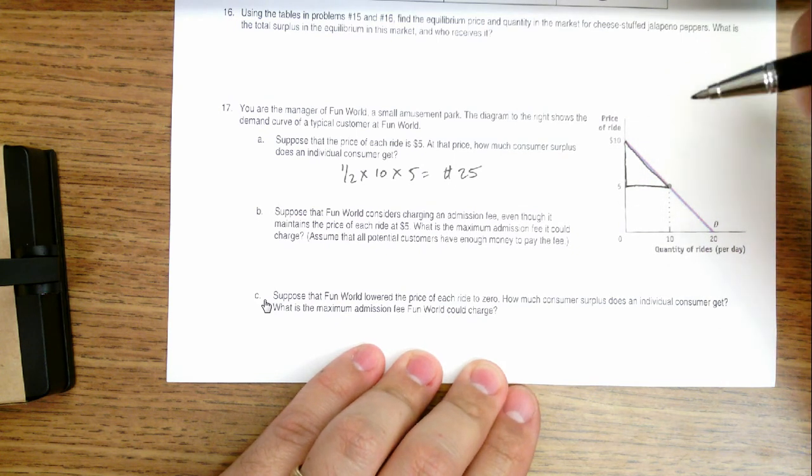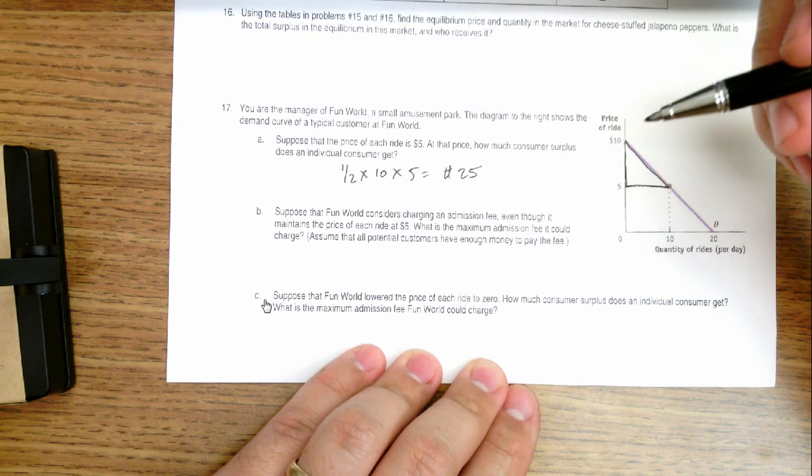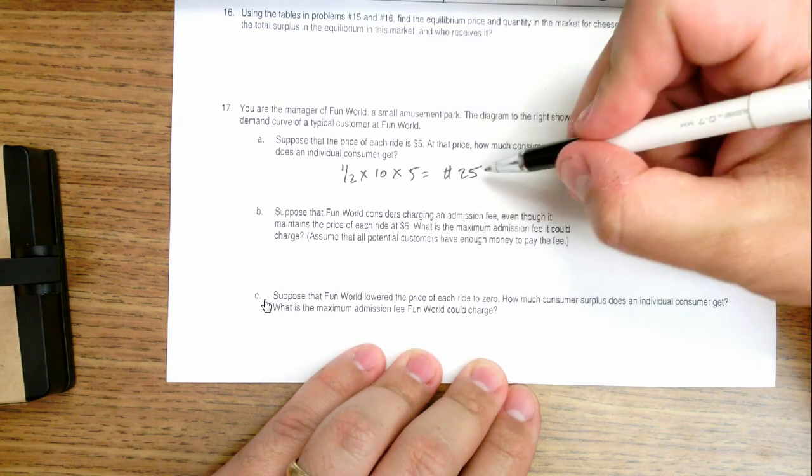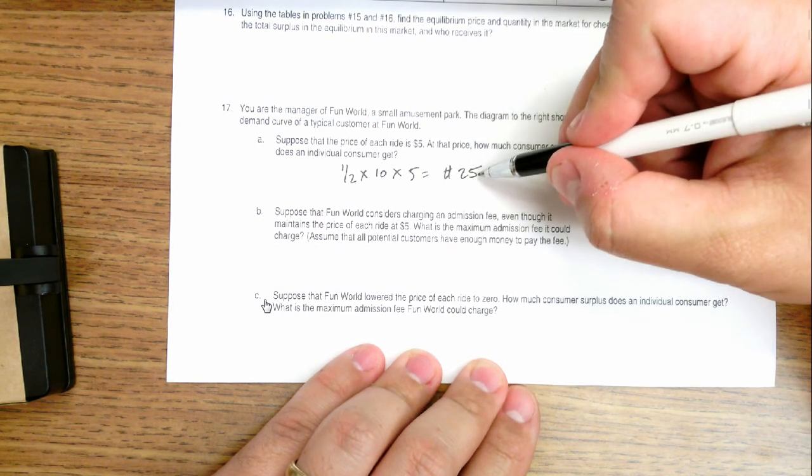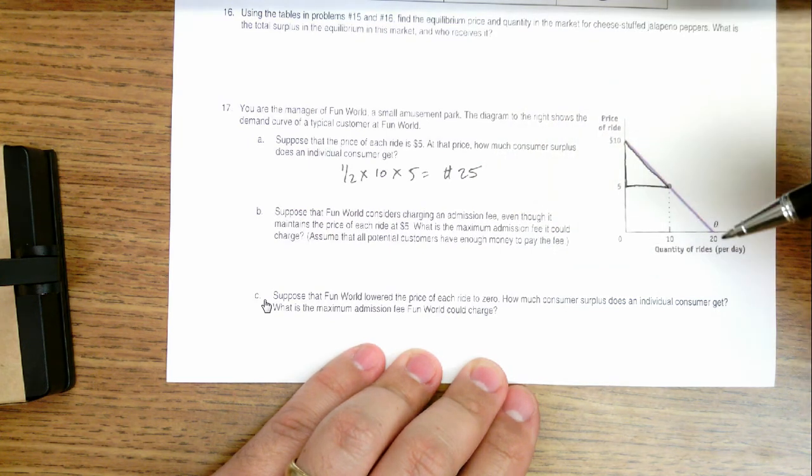The answer to that is essentially the consumer surplus that each person is getting. Each person is getting $25 of surplus, meaning they'd be willing to pay $25 more to get those five rides than they have to.